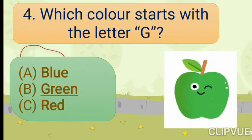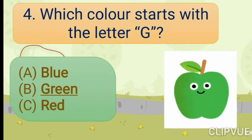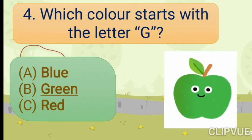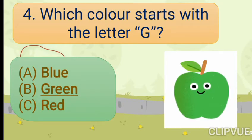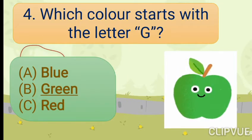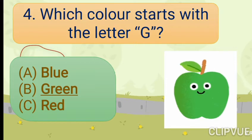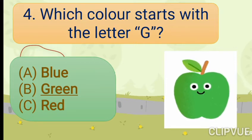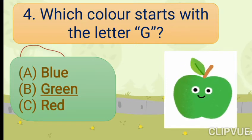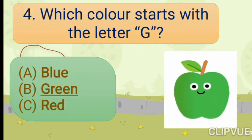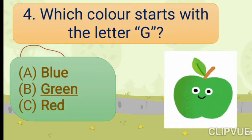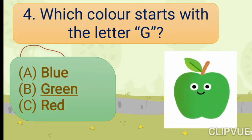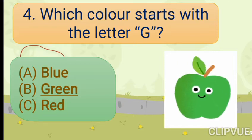Number 4. Which color starts with the letter G? Option A: Blue. Option B: Green. Option C: Red. Answer is Option B: Green.